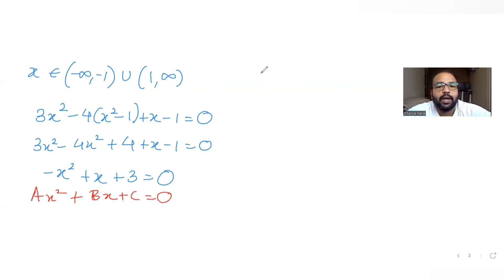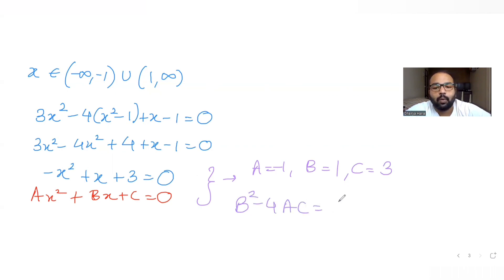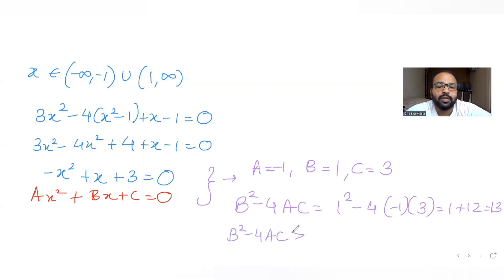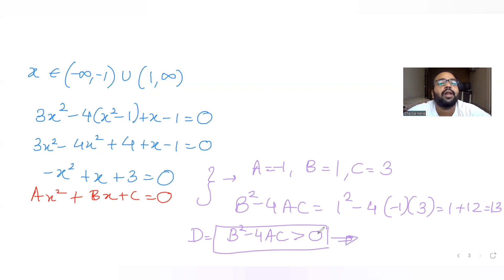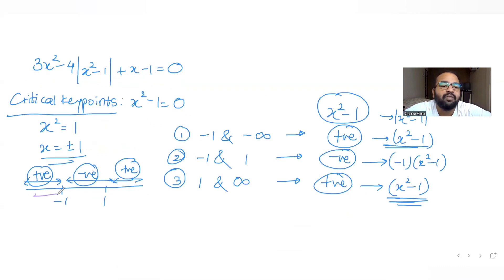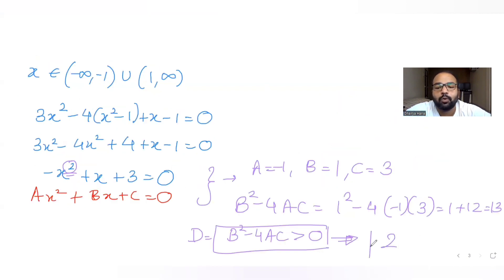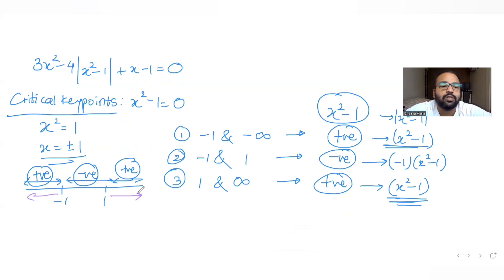Comparing with ax² + bx + c = 0, I get a = -1, b = 1, c = 3. So the discriminant b² - 4ac = 1² - 4(-1)(3) = 1 + 12 = 13, which is greater than 0. Since the discriminant is greater than zero, we get real and unequal roots. Since the highest power is 2, we get two real roots for these two outer regions.